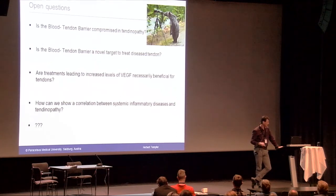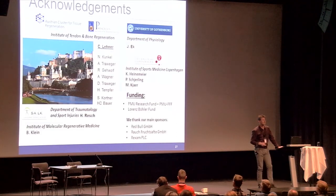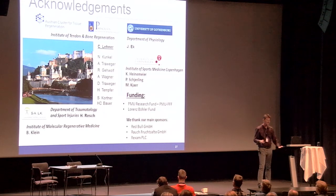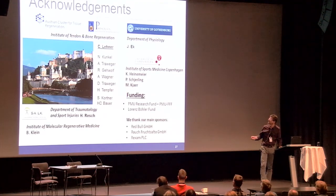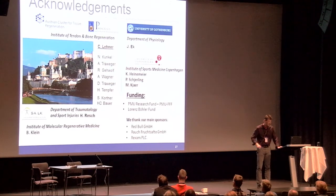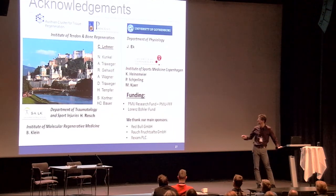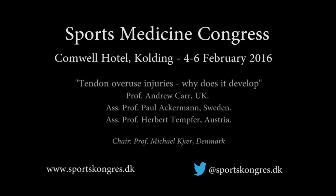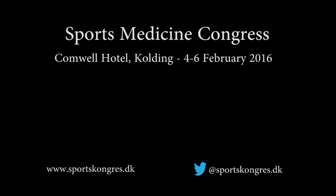This is a basic research talk — it always has to come up with more questions than answers. What we really need to find out: is the blood-tendon barrier compromised in tendinopathy? Could it be a novel treatment target — to try to re-tighten the vessels? Should we be euphoric if anything we inject brings VEGF up? Can we find a correlation in humans between systemic inflammatory diseases and tendinopathy? Thank you very much for your attention.